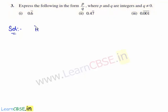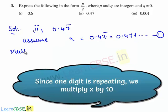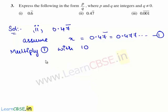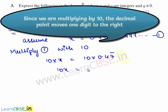The second decimal expansion given is 0.47 bar. We shall assume the given decimal expansion as x. Therefore x is equal to 0.47 bar, which is 0.477 and so on. Consider this as equation 1. Since 1 digit is repeating in the given expansion, we multiply equation 1 with 10, that is 10 times x is equal to 10 times 0.47 bar.